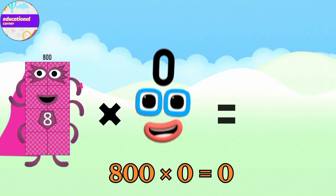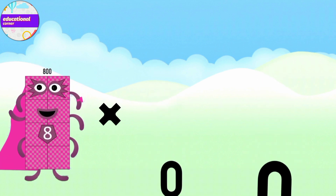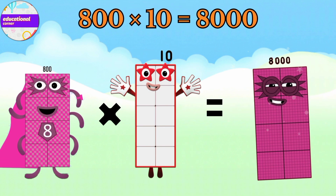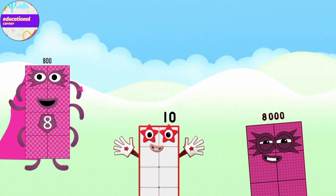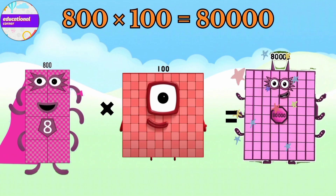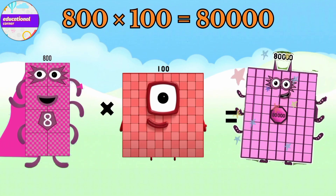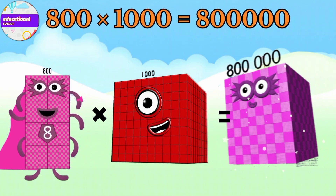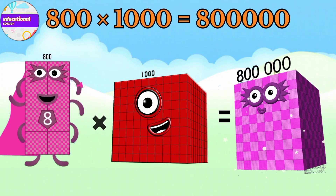800 x 0 equals 0. 800 x 100 equals 800,000. 800 x 100 equals 800,000. 800 x 1000 equals 800,000.